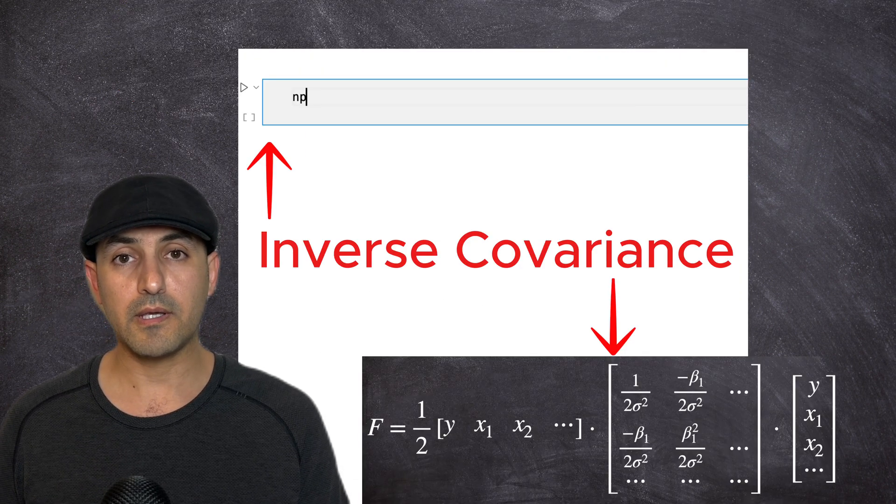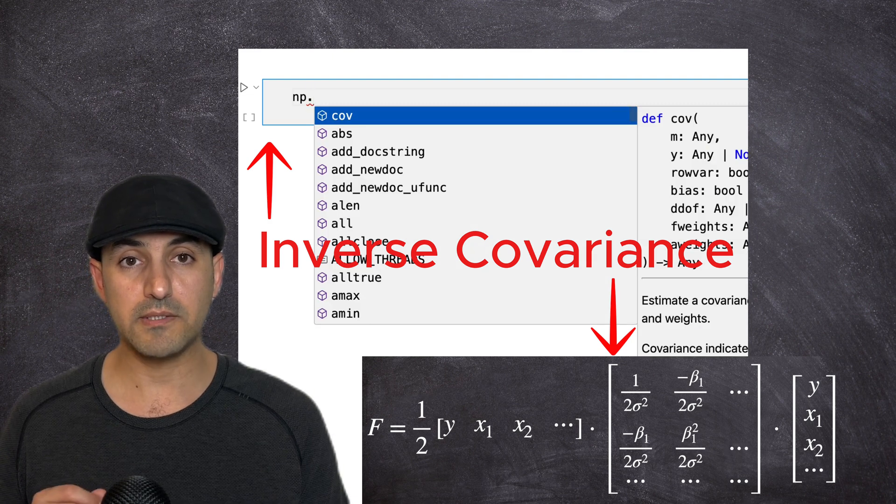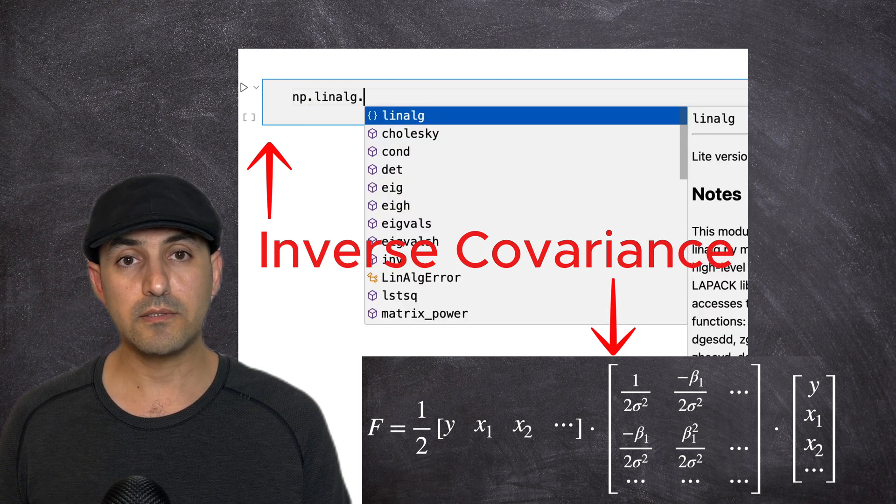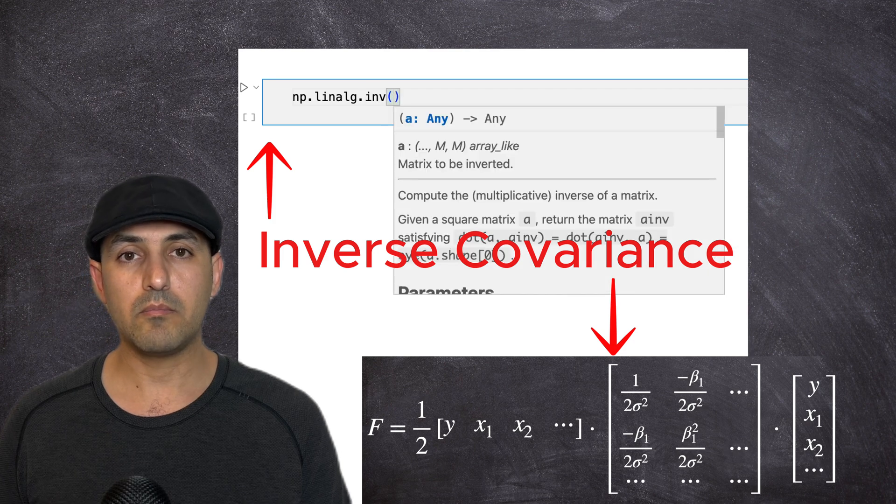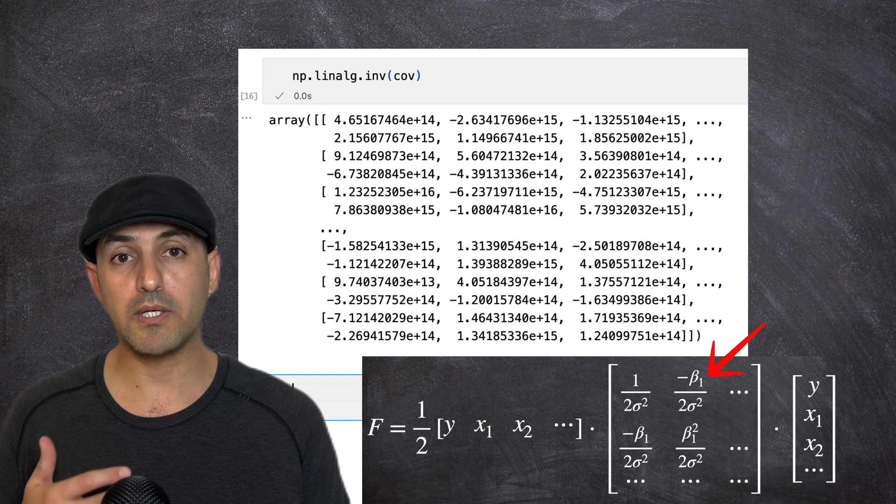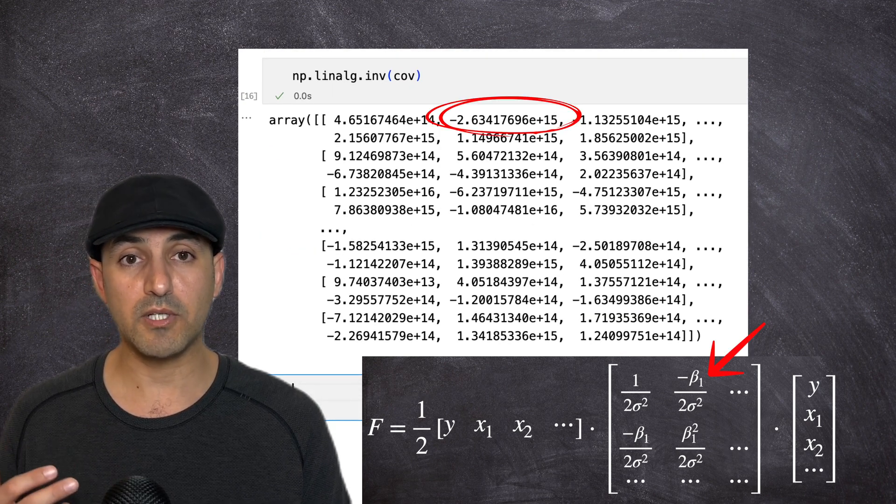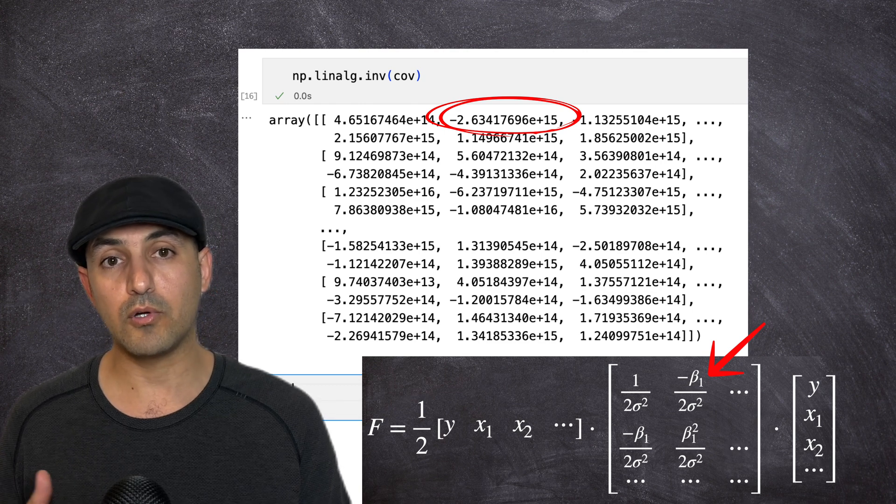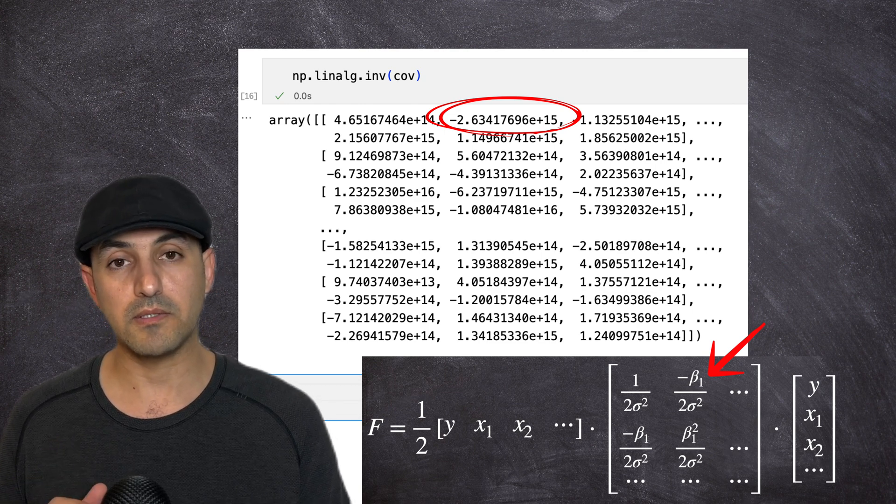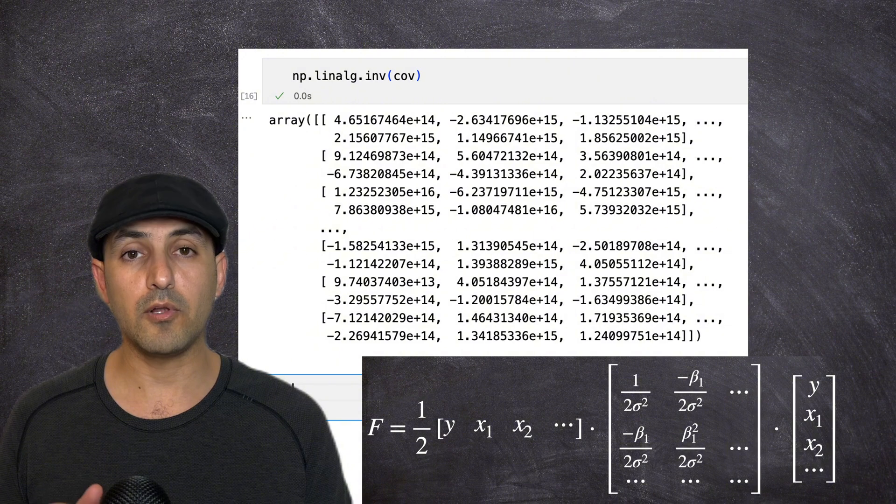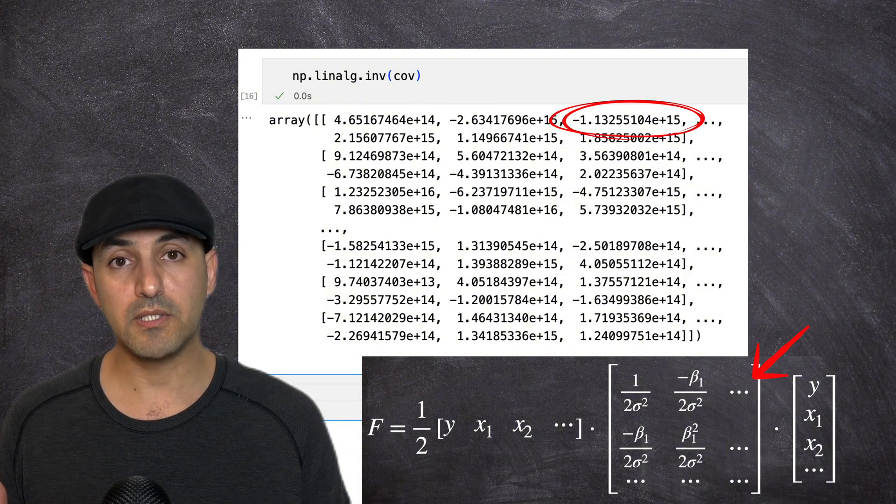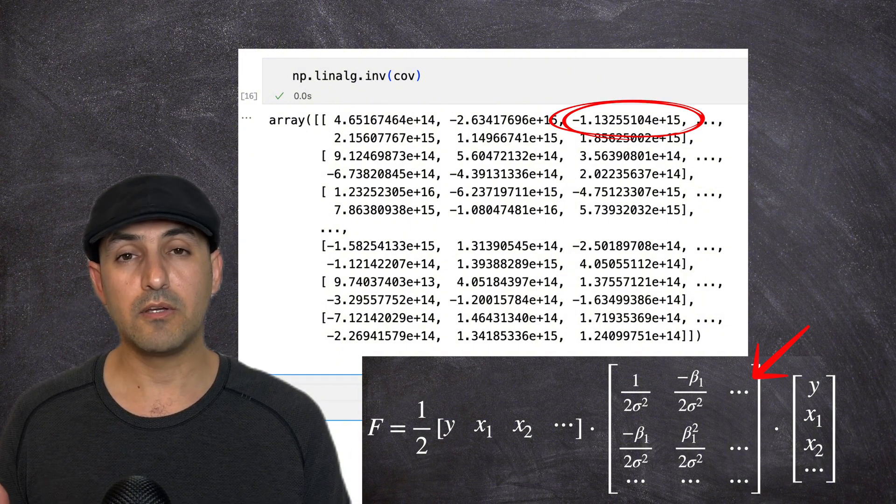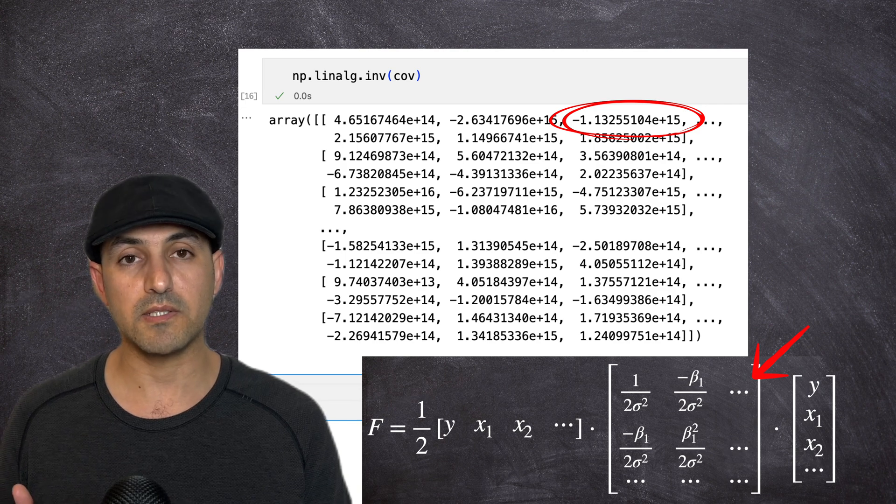Next, I can compute the inverse of the matrix using linalg.inv method of NumPy. Beta 1 is then equal to minus of 2 times sigma square times the 1, 2 component of the estimated matrix. And I can follow these same procedures to estimate the rest of the beta parameters without going through the minimization task.